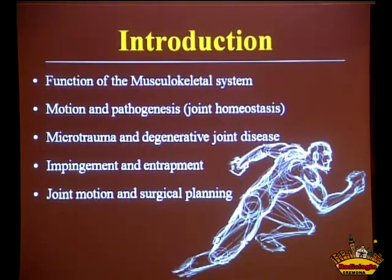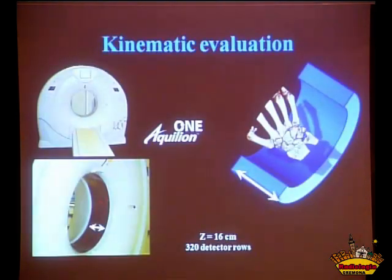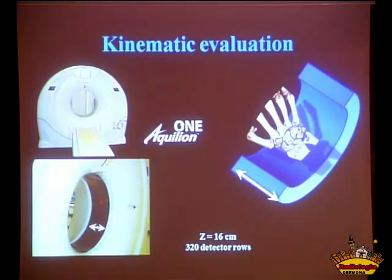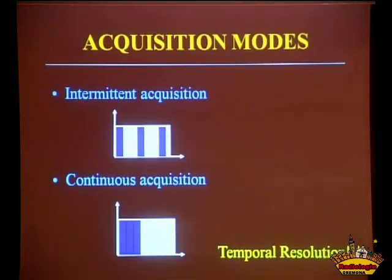This is also interesting for pre-surgical planning, because what the surgeon basically wants is to reestablish joint motion as best he can to regain joint homeostasis. If we can show the surgeon exactly what is wrong with joint motion, he can prepare better for the surgery. This scanner is pretty interesting in that application, because the 16 centimeters' coverage allows us to evaluate almost all the joints in the human body with a single turn of the x-ray tube. The top rotating speed of the x-ray tube is 0.35 seconds, which is pretty fast, and it allows the acquisition of very good, high-quality images.